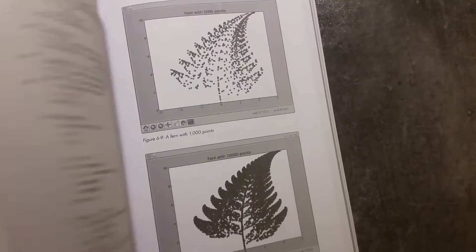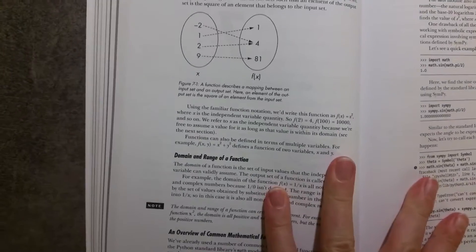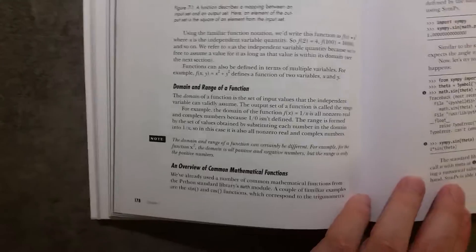And then at the back here, I just wanted to show you chapter seven, which is the one on calculus, which I think is quite useful just to show you where the book goes, how far the book goes. So I'd say this chapter on calculus is probably the most advanced chapter in the book.